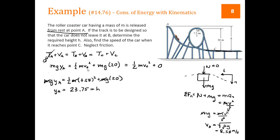Now we're going to use the first one and the last one because they're all equal. We've got MG times 23.75 is equal to 1/2 MVC squared. M's cancel, we can solve for VC to be 21.6 meters per second.